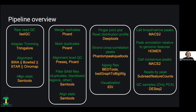After alignment, some alignment statistics are calculated using various tools. Then, if there are replicates, they are merged using Picard. Duplicates are marked also using Picard. There is quality control at the alignment level using PreSeq and Picard. The BAM files are then filtered for the duplicates that were marked in the previous step.